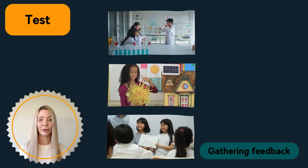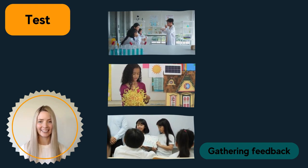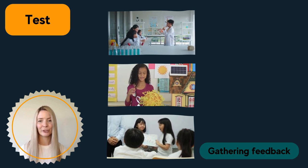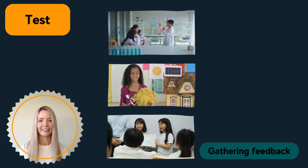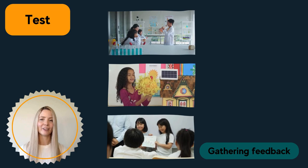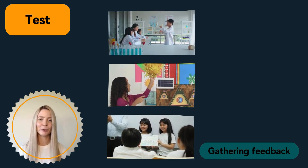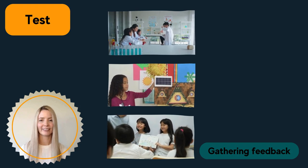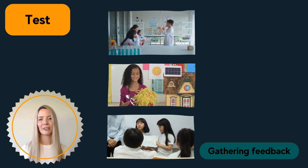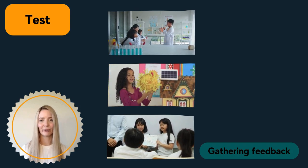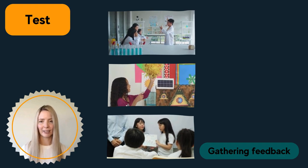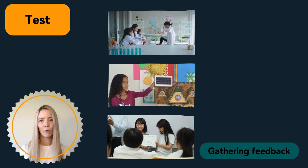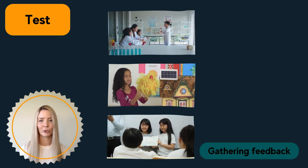Once you have your prototype, you're ready to test. In this stage, you want to test your prototypes with real users and gather feedback. This iterative process allows you to gather feedback that can help you to improve designs based on real-world insights from your users. Some ways you can collect testing feedback could include observing users and making notes, asking them to complete a feedback form, or by interviewing them after or during their testing.